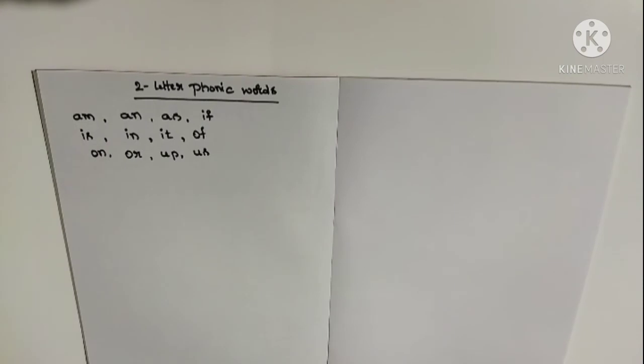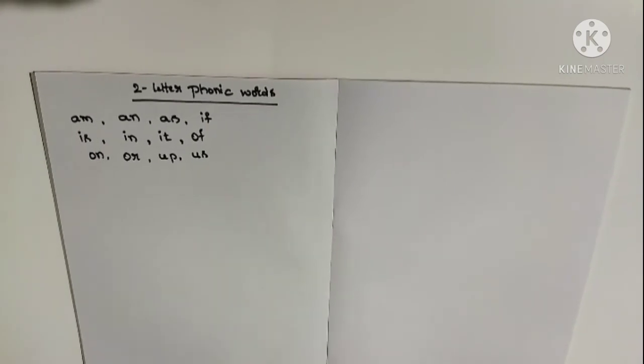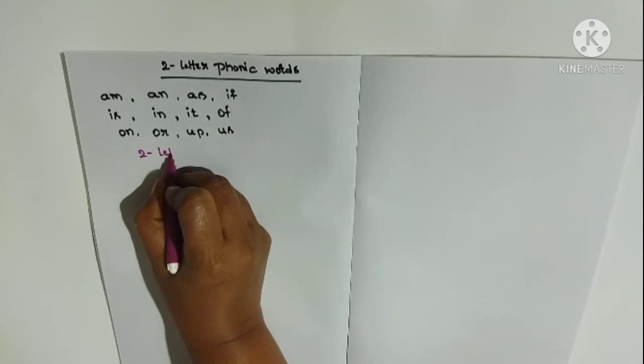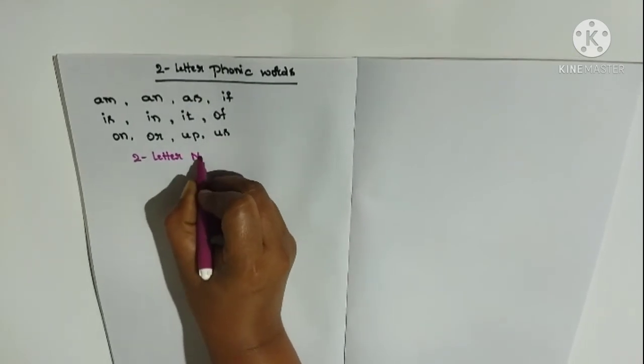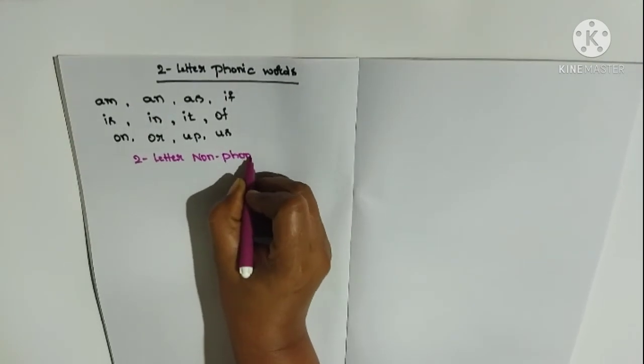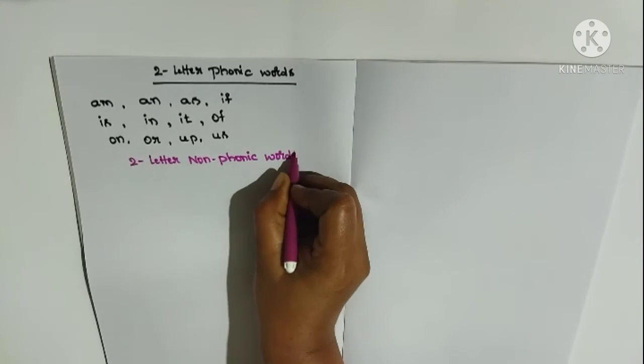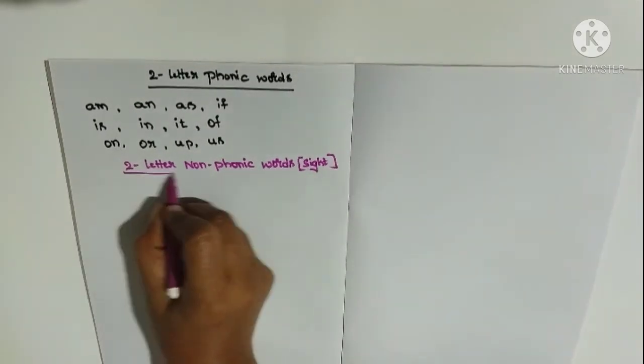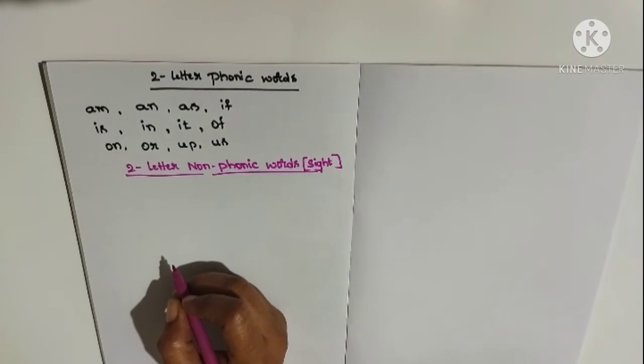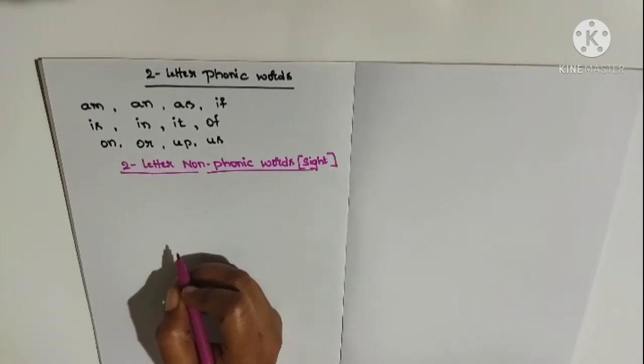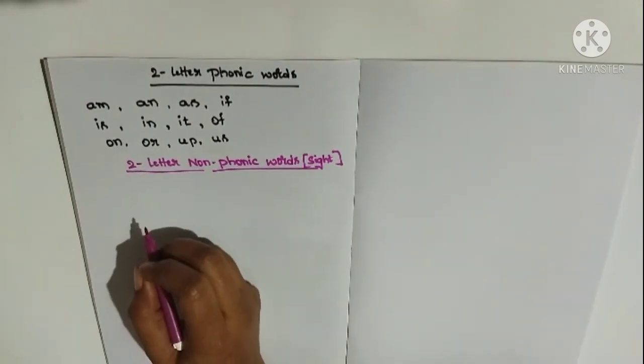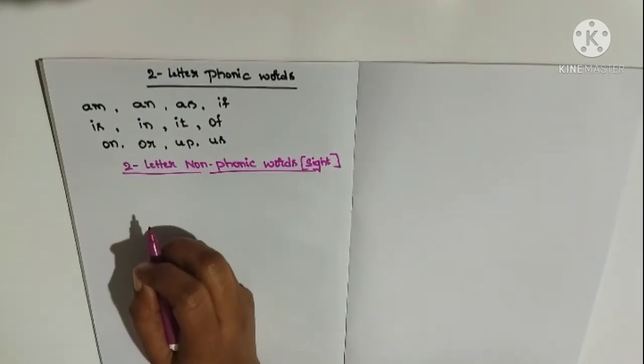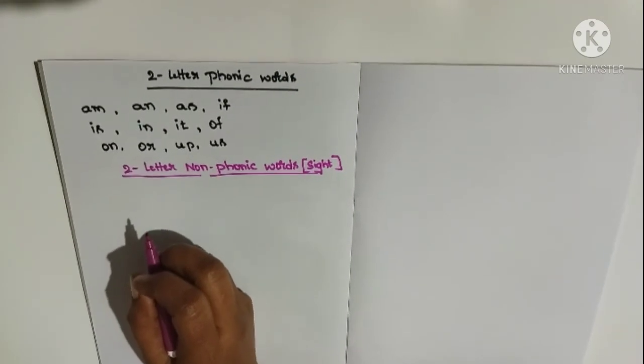Now, let us move on to the two-letter non-phonic words. Two-letter non-phonic words. We also call them as sight words. We have so many sight words. In the earliest stage, let the child learn these sight words. The sight words, we won't read them with their sounds.